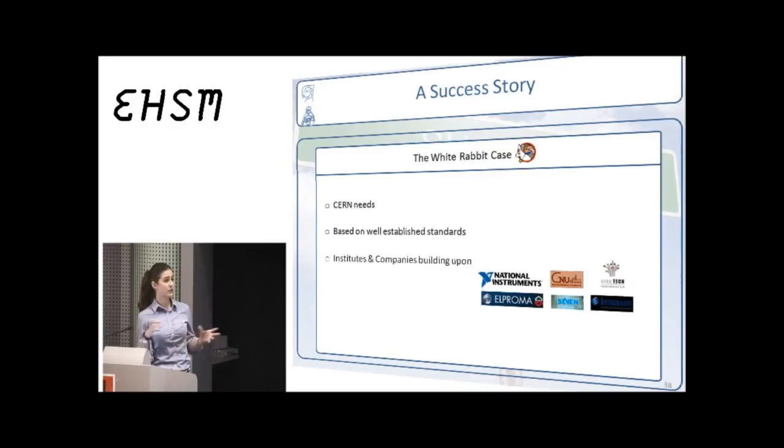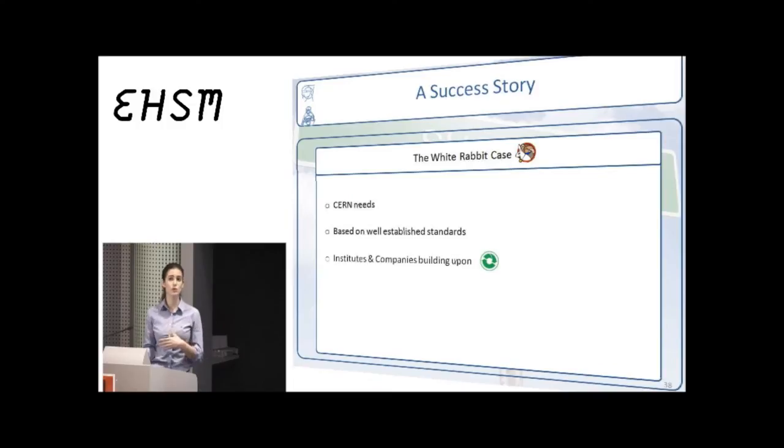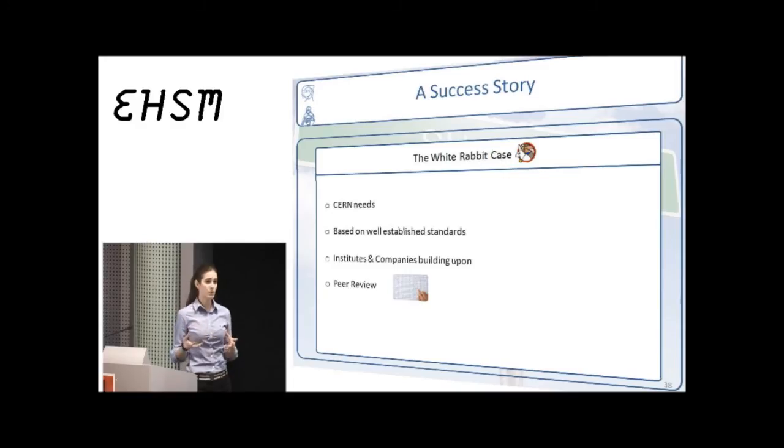The different players would build upon the initial ideas. They would take parts of the design. They would modify them and they would create new products according to their own needs. Peer reviewing also worked very well. For example, the companies that would manufacture and sell White Rabbit components for the CERN needs, they would spot weak points, report them to us, and then we would solve them together in collaboration.